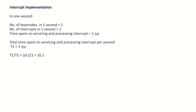Now in the second implementation, which is the interrupt implementation, an interrupt will be sent to the system whenever a key has been pressed. We know that the number of keystrokes in 1 second is 1, so there will be only 1 interrupt in 1 second. It is given that the time spent on servicing and processing the interrupt is 1 millisecond. So T2 is 1 millisecond.